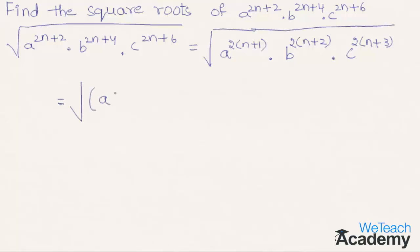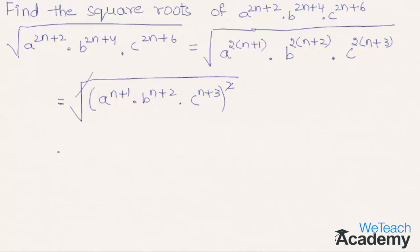This can be written as the square root of a power (n+1) into b power (n+2) into c power (n+3), whole square. So here the square and root get cancelled and we get the expression as a power (n+1) into b power (n+2) into c power (n+3).